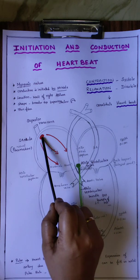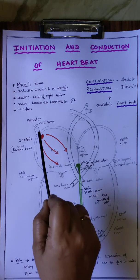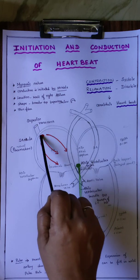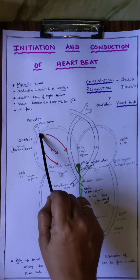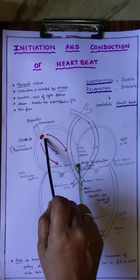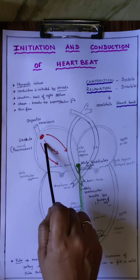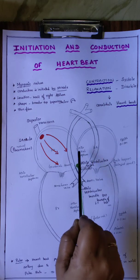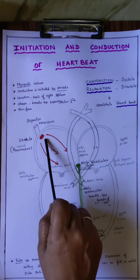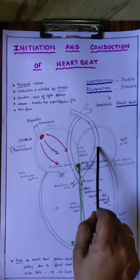This conduction happens with the help of the SA node — that is the sinoatrial node. The sinoatrial node is located in the wall of the right atrium, just below the opening of the superior vena cava. This SA node is otherwise called the natural pacemaker of the heart. Its function is to produce electric impulses. This electric impulse makes the heart pump blood continuously. The SA node produces electric impulses at a moderate speed, and the impulse is carried to the left atrium as well, making the atrium contract.